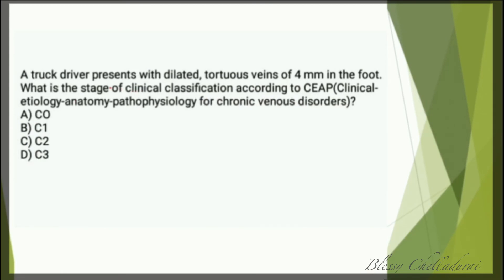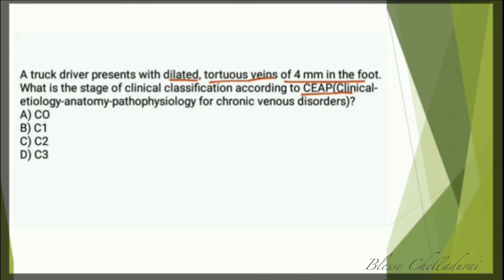Next question: a truck driver presents with dilated, tortuous veins of 4 mm in the foot. What is the stage of clinical classification according to the CEAP classification? Options: A) C0, B) C1, C) C2, D) C3. The answer is C2, since dilated tortuous veins of 4 mm signify varicose veins, and C2 indicates varicose veins. C2R indicates recurrent varicose veins.